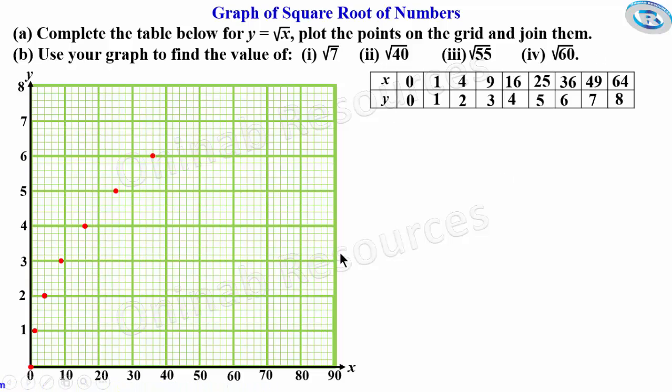When x is 49, it's halfway between 50 and the line before it. Y is 7. This is the point here. When x is 64, this is 60, 64, y is 8. So we have the point here as (64,8). Then we join the points. We are done with part A of the problem.